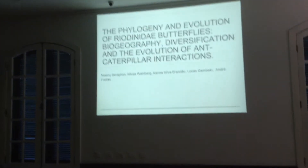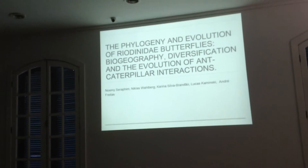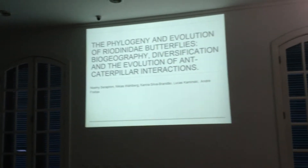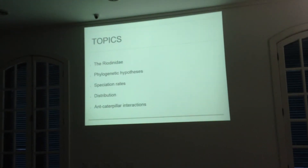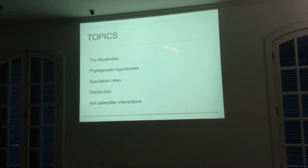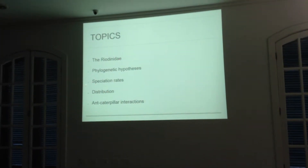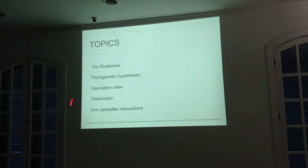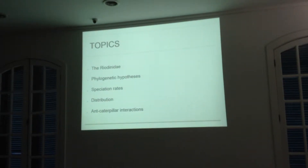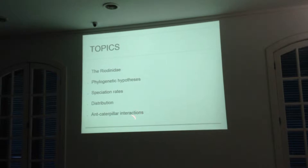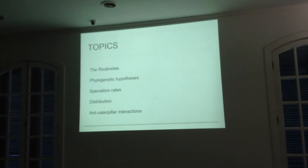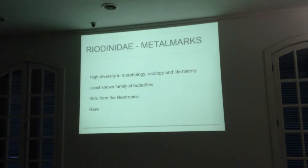Today I'm going to talk about one of the families of butterflies. We did the phylogeny, and what we wanted to understand was how the evolution of ant-caterpillar interactions occurred. The topics I'll cover are: my butterflies, my phylogenetic hypothesis, an analysis of speciation rates, the distribution of my butterflies, and how ant-caterpillar interactions are distributed in the tree. This is ongoing work — the phylogeny is nearly ready to be submitted, but the rest is still in progress.